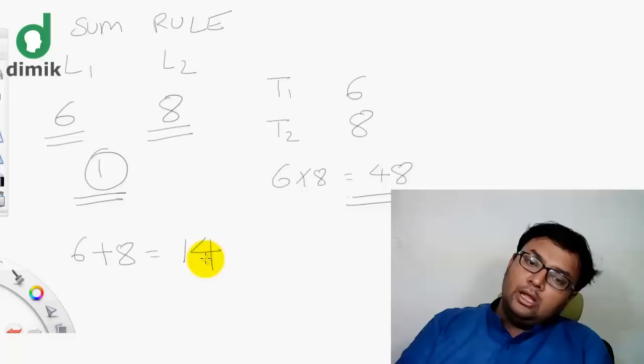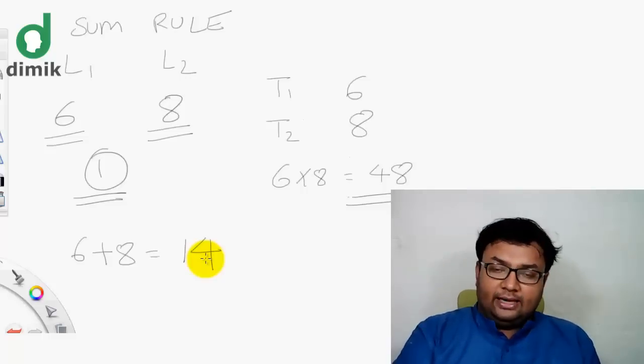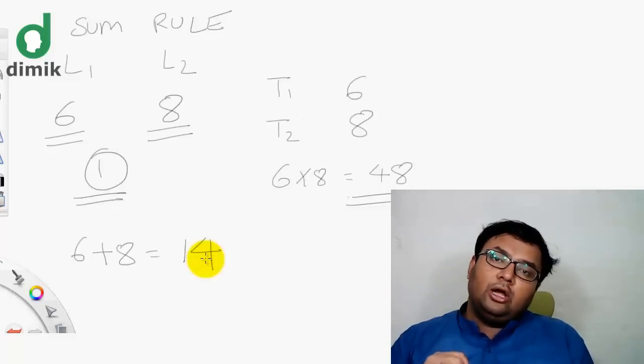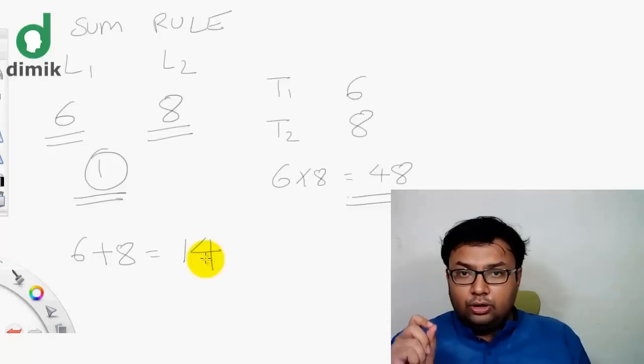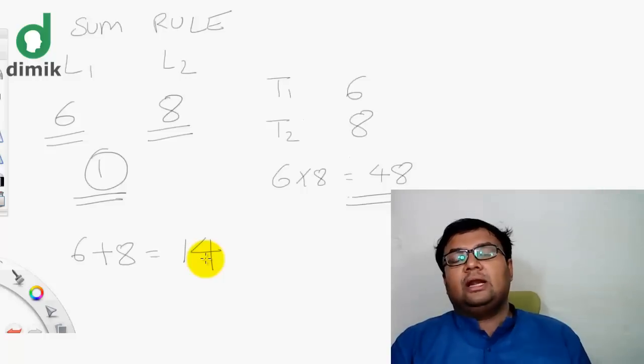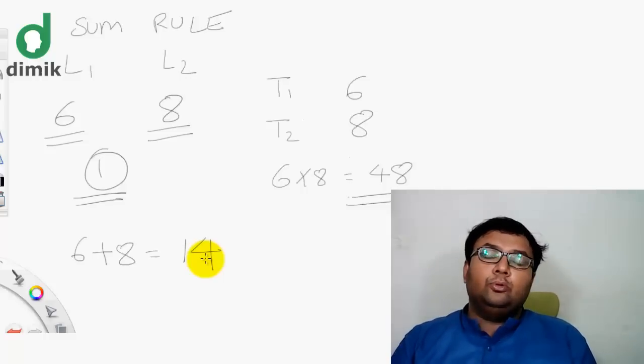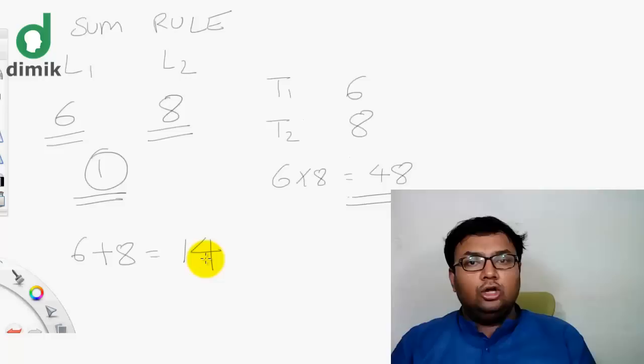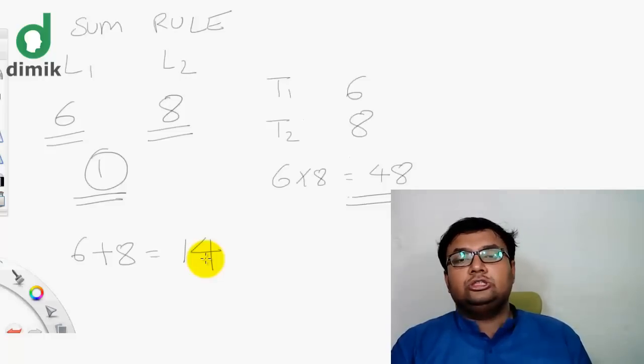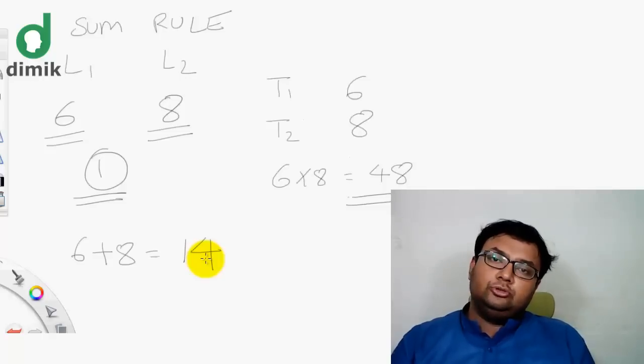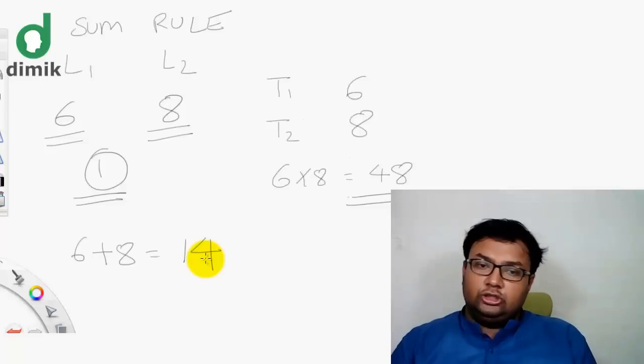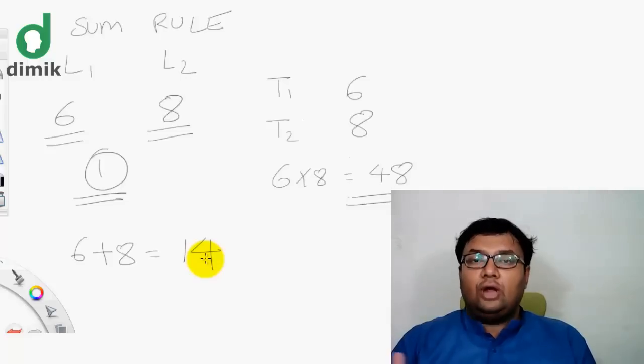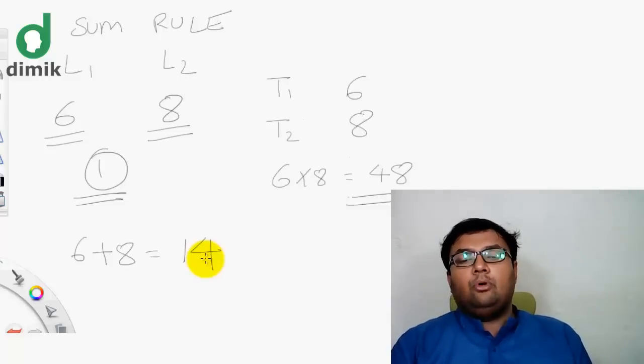The second option is to check whether the topic is independent or not. If the tasks are not independent, and there is one list or the other option, then I will be able to do the sum rule.